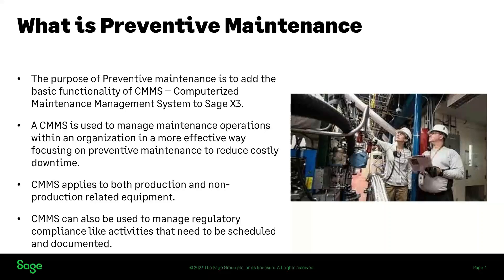A CMMS is used to manage maintenance operations within an organization in a more effective way by focusing on preventive maintenance to reduce costly downtime. This includes production and non-production related equipment. A CMMS allows processing for preventive maintenance, plan maintenance, and breakdowns. It can also be used to manage regulatory compliance for quality management systems — activities like calibrations and inspections that need to be performed on a scheduled basis. In simple terms, think of managing your vehicle's maintenance — the same applies to equipment within a production facility. Preventive maintenance will bring the 'change oil light' to Sage X3.